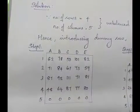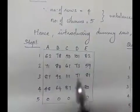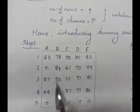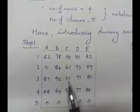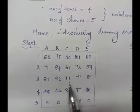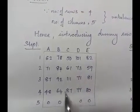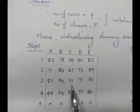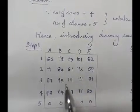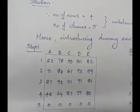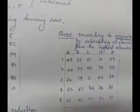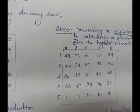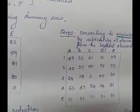For the maximization case, to find the solution we first convert it to a minimization problem. To convert to a minimization problem, we identify the highest value in the table and subtract all elements from that highest value. This gives us the minimization table, and then we apply the Hungarian method.